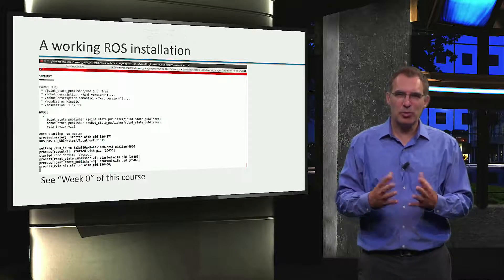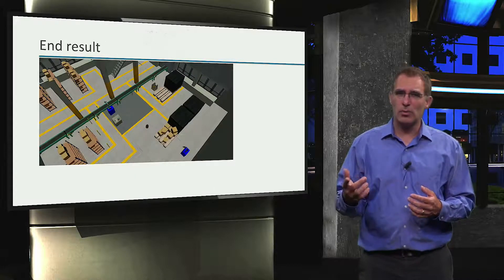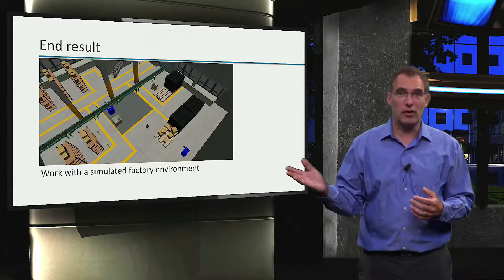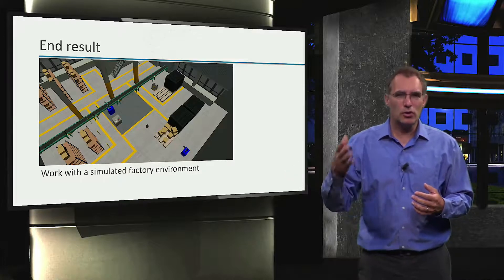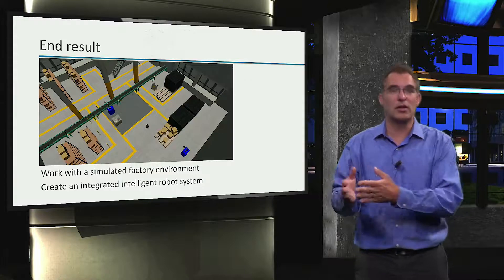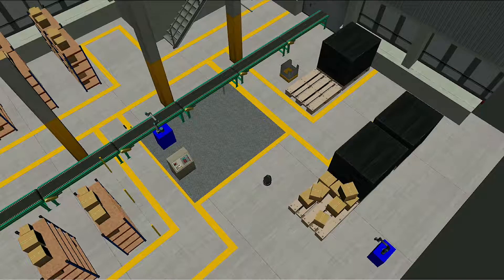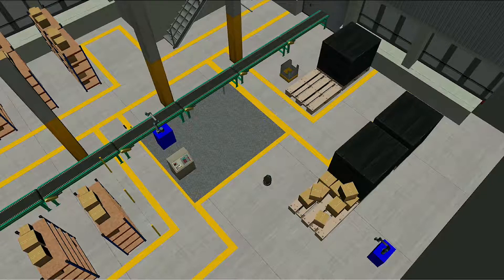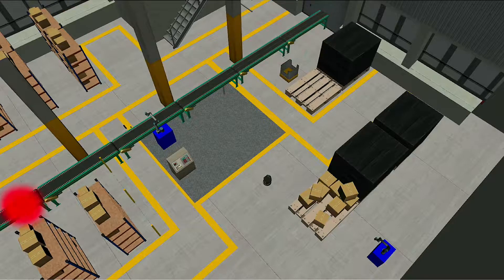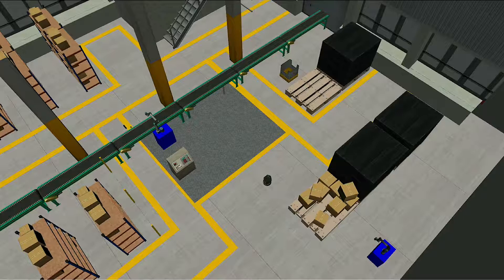So, given these prerequisites, you can expect the following end result. After this course, you will be able to work with a simulated factory environment, and you will be able to create an integrated intelligent robot system that can function within this environment. You will get to know this logistics factory that we modified from our open source collaborators at the Southwest Research Institute, which includes a conveyor belt, two industrial robot arms, and a mobile robot.